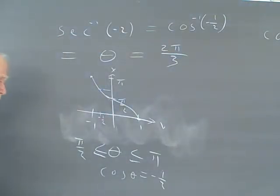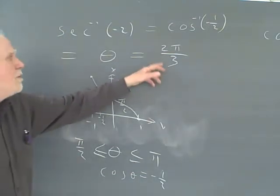I'm just going over in my head just real quick here. Yeah, that's correct. So that's what the secant inverse of negative 2 is, 2 pi over 3.